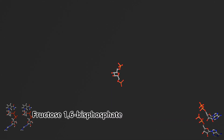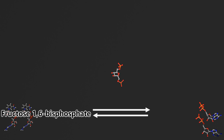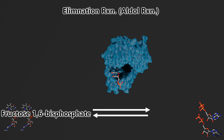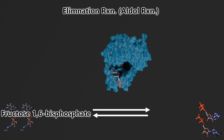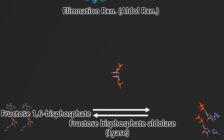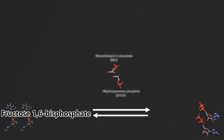Fructose 1,6-bisphosphate is then cleaved by an elimination reaction catalyzed by a lyase, specifically called fructose bisphosphate aldolase, in which an aldolase is catalyzing the aldol reaction — a specific elimination reaction to create or split an aldol, in this case the fructose molecule. This cleavage of the molecule creates dihydroxyacetone phosphate and glyceraldehyde 3-phosphate.